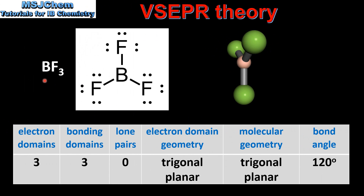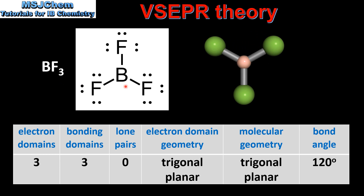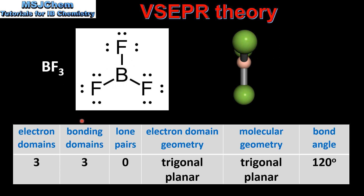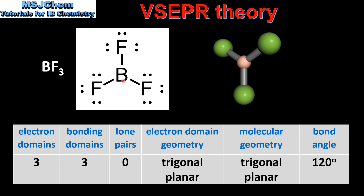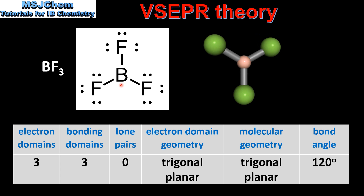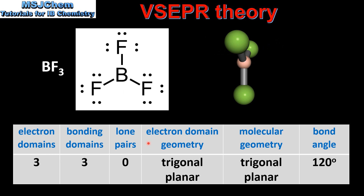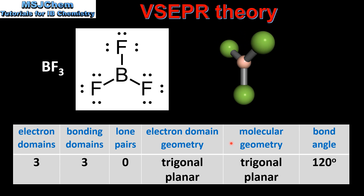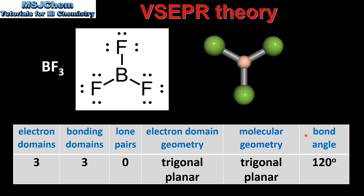Next we look at BF3, which is boron trifluoride. Here we have the Lewis structure for BF3. It has 3 electron domains around the boron atom, which are 3 bonding domains, and 0 lone pairs of electrons. The electron domain geometry is trigonal planar, the molecular geometry is also trigonal planar, and the bond angle is 120 degrees.